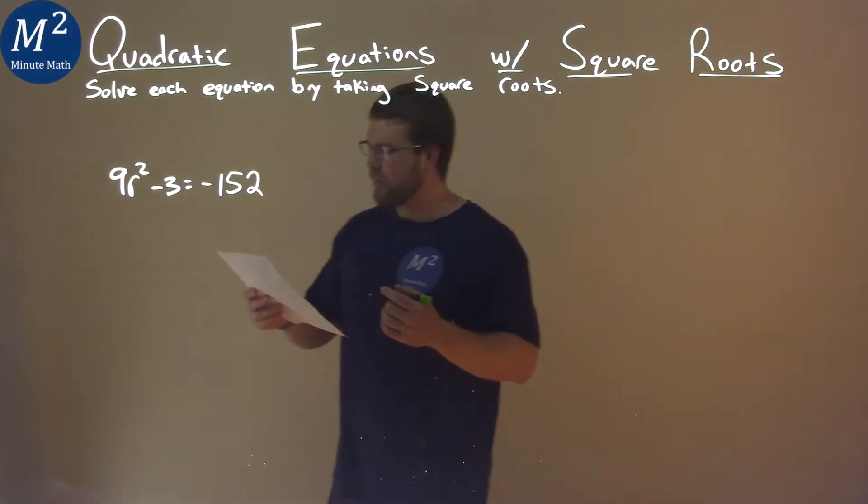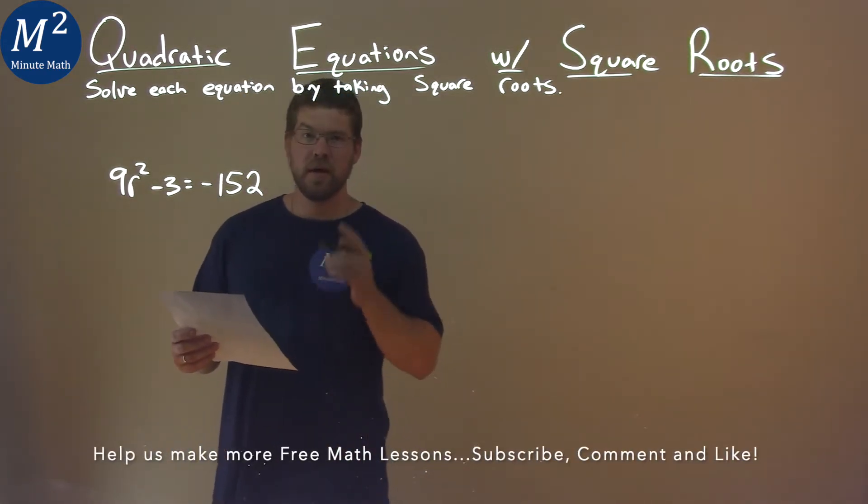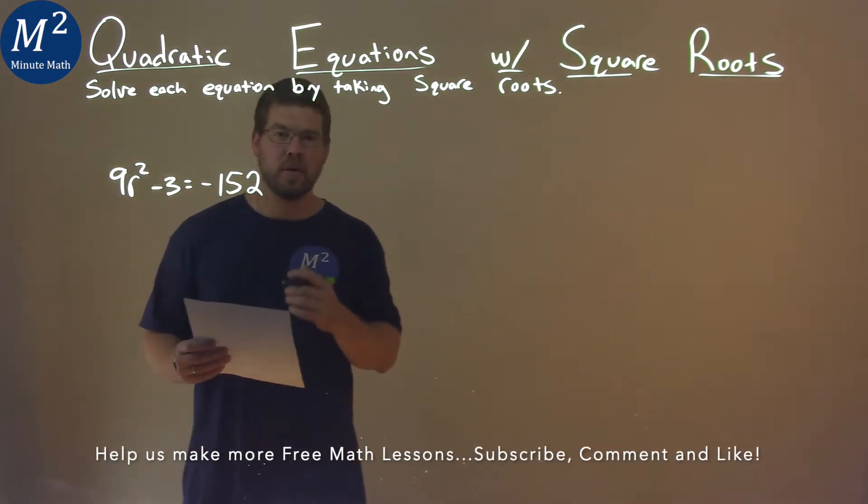We're given this problem right here. 9r squared minus 3 equals negative 152, and we have to solve this equation by taking square roots.